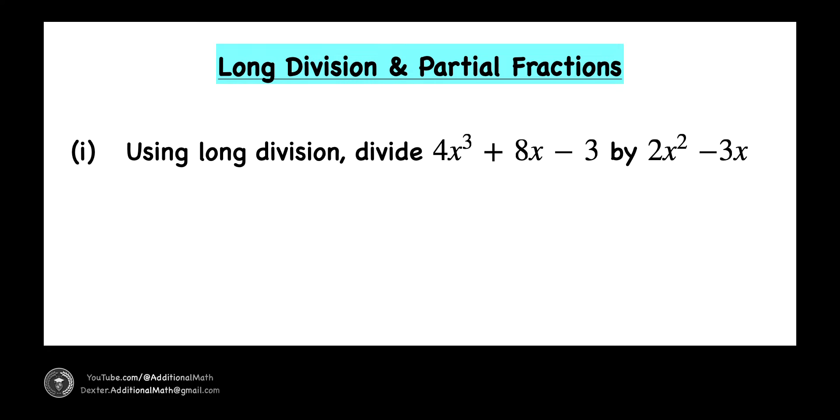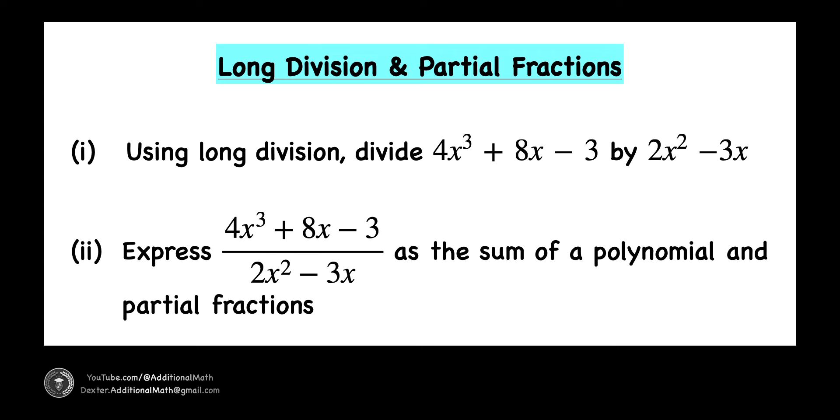In part 1, divide 4x cubed plus 8x minus 3 by 2x squared minus 3x using long division. Next, express the result in part 1 as the sum of polynomial and partial fractions. Pause to give this question a try, and when you're ready, keep watching to learn how to solve this problem.